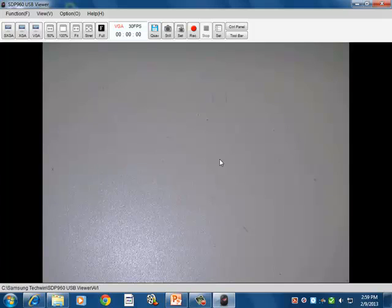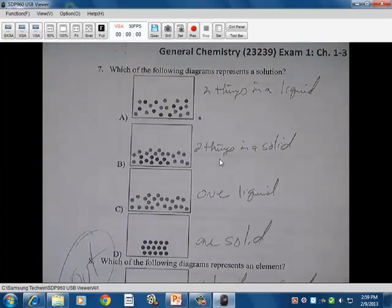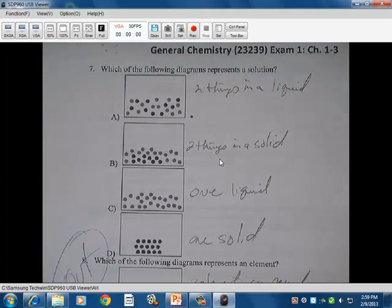Number seven. Picture there. Which of the following diagram represents a solution. So you see the two dark. You have the dark and the light. And in your particular version of the test, it was a little easier to see. This one is kind of a little bit of a bad copy.